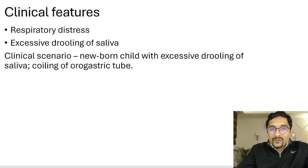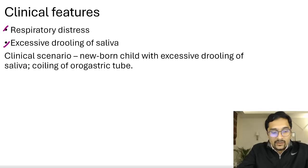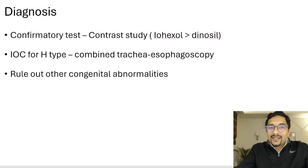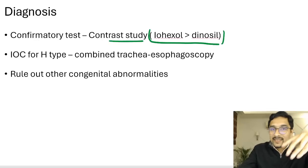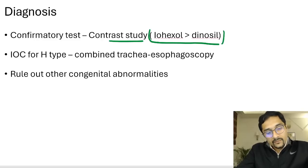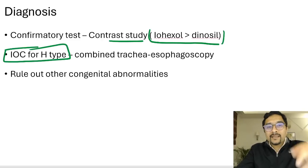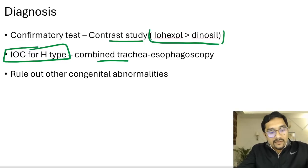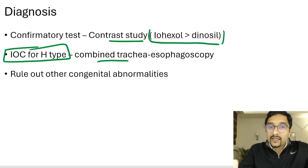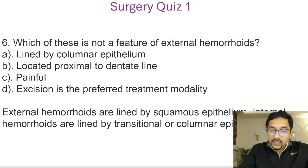The child presents with respiratory distress and excessive drooling of saliva. The confirmatory test is a contrast study — iohexol is preferred over Dionosil. For H-type fistula, combined tracheoesophagoscopy is used, and this was once asked in the exam. Remember: whenever any congenital anomaly is detected in a child, always rule out other congenital anomalies before starting management.